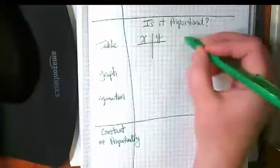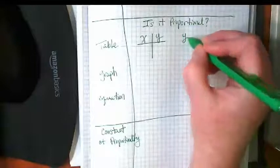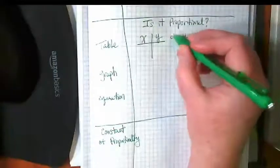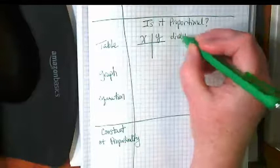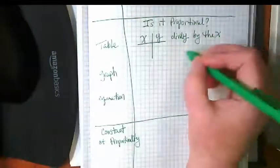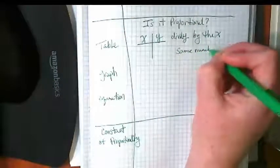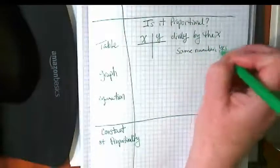So that means that I can take the Y and I can divide the Y by the X, and if it's the same number every time then yes, it's proportional.